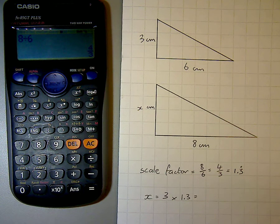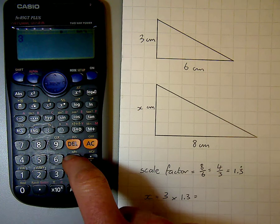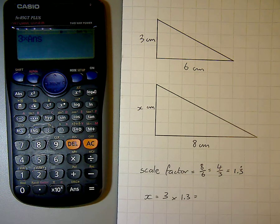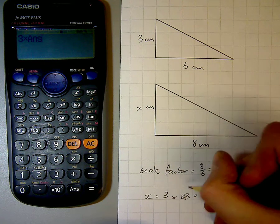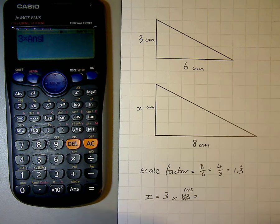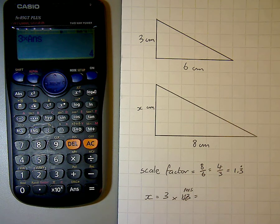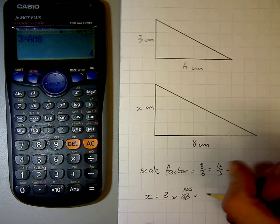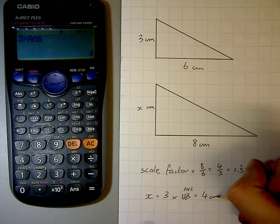is I can actually type in 3 times by answer. So 3 times by answer, okay, which uses the full decimal, which gives me the right answer. Correct answer, 4 centimeters.